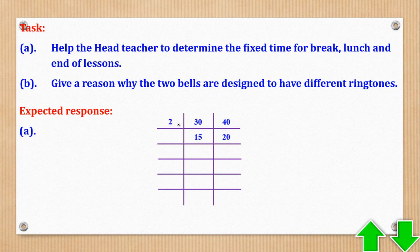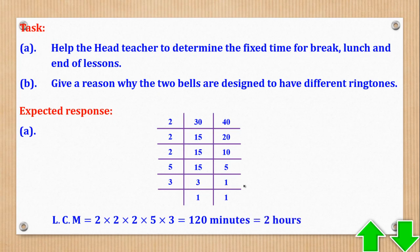If we divide by 2, we shall get 15 for this and 20 for this. Divide by 2. This divide by 2 leaves a remainder, that's why it remains 15. So you don't need to divide it if it leaves a remainder. So 20 divided by 2 gives you 10. Again, divide by 2. This remains 15. This becomes 5. Divide by 5. This becomes 3. This becomes 1. Divide by 3. We get 1, 1. Therefore, the LCM will be 120 minutes, which is the same as 2 hours.